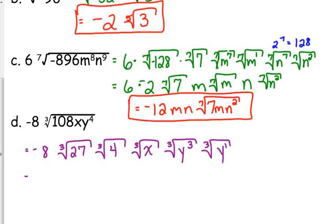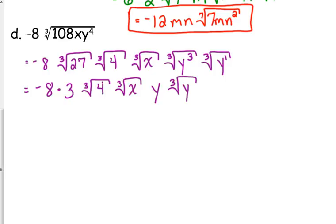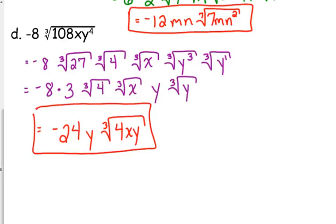Now I do realize that some of you are getting to the point where you don't have to write out every single little piece, and that is fine. But I'm going to continue doing it this way because of mistakes and errors that I've seen in the past. This really helps when you're really trying to understand. So cube root of 27 is 3. Cube root of 4 can't be simplified. Cube root of x can't be simplified. Cube root of y cubed is y, and the cube root of y cannot be simplified. So the final answer: negative 24 y cube root of 4 x y. Final answer.